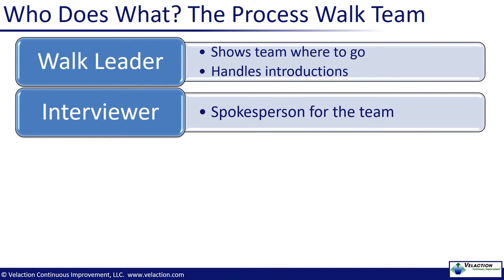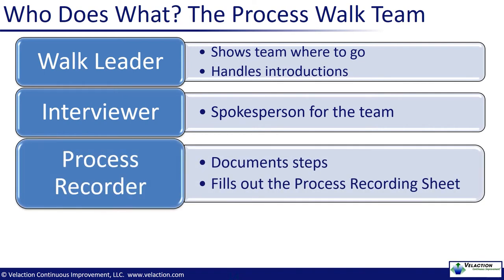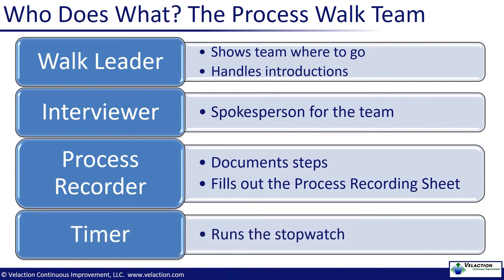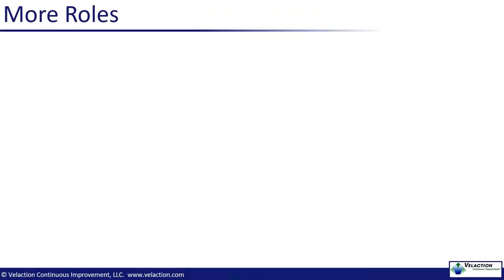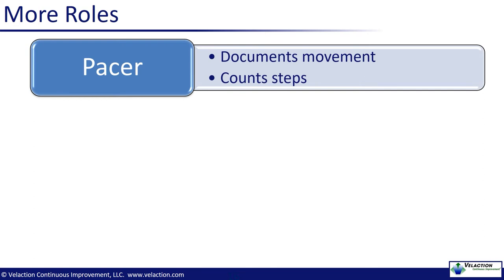The team should also have a spokesperson who will do most of the talking during the process walk. That's not to say that nobody else can speak, but we don't want a person to get peppered by questions from all directions. The process recorder is the scribe for the team. Everyone can take notes and should take notes, but the process recorder manages the official documentation. The timer is one of the extra roles that can easily be rolled in with the process recorder. This person manages the stopwatch and updates the process recorder on the time. The pacer measures the distance that an employee walks while doing his or her job. For many people doing office work, the distance will be zero. But some people walk to file cabinets and printers and to get approval or back and forth from a customer service desk.